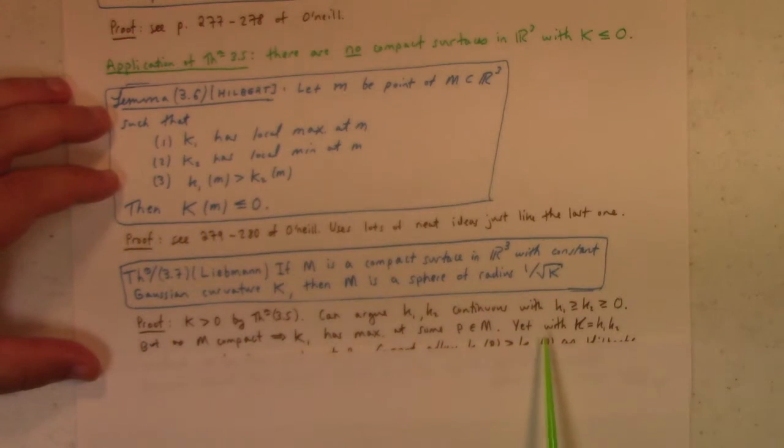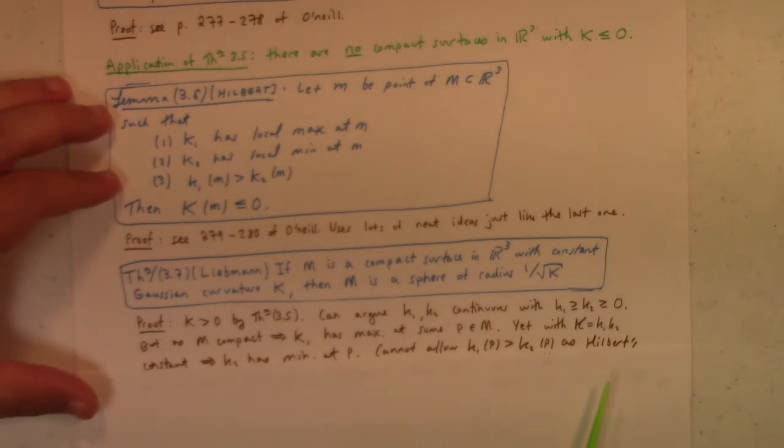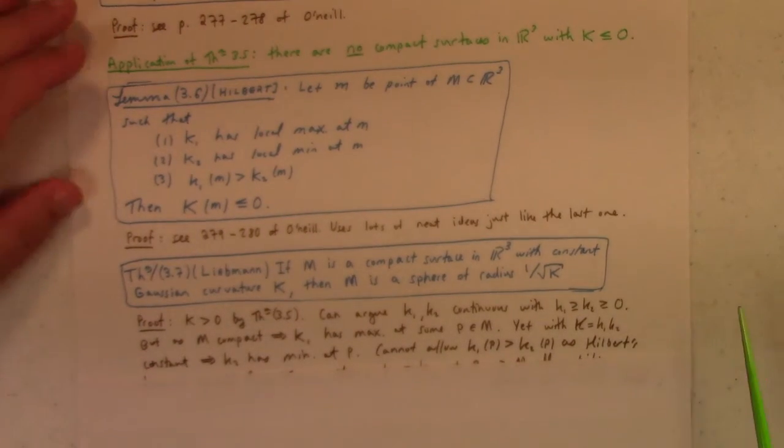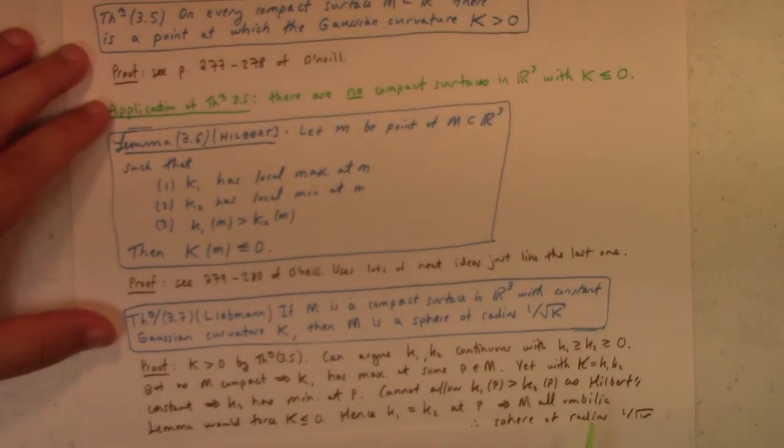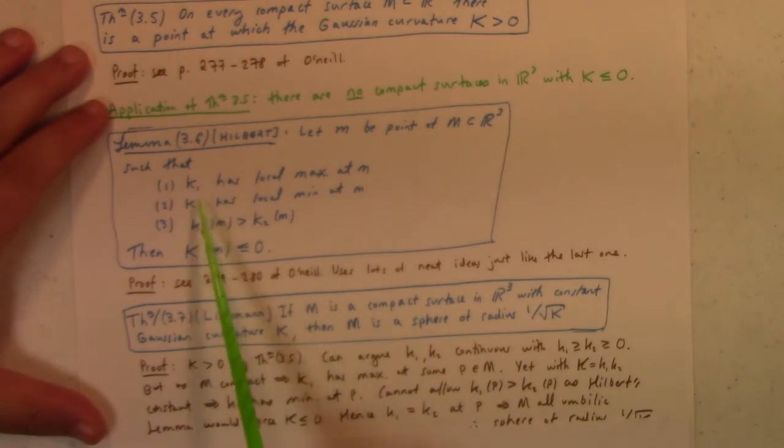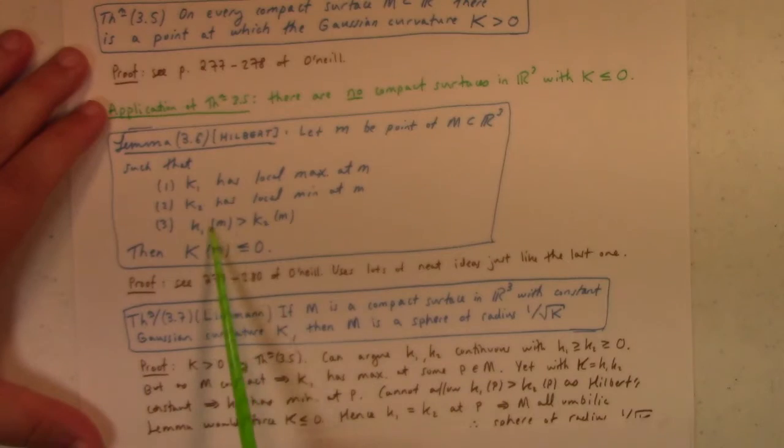But, on the other hand, the Gaussian curvature is the product of the principal curvatures, k1 and k2. So if k1 takes a max, that means k2 has to take a min, if you think about it. But then, all of a sudden, we fit the bill up here for Hilbert's. We got k1 a max, k2 a min. So, goodness gracious, if we have k1 greater than k2, that means that the Gaussian curvature is forced to be non-positive. And yet, the Gaussian curvature is positive. So we can't have k1 greater than k2.